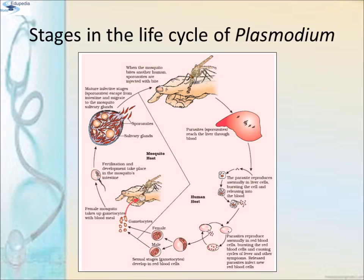This diagram shows the stages in the life cycle of Plasmodium. When the mosquito bites a human, sporozoites are injected. The sporozoites reach the liver through blood, where parasites reproduce asexually, bursting the liver cells and releasing into the blood. Parasites then reproduce asexually in red blood cells, bursting them and causing cycles of fever and other symptoms. Released parasites infect new red blood cells. In the sexual stage, gametocytes develop in the red blood cells. The female mosquito takes up gametocytes during a blood meal; fertilization and development occur in the mosquito's intestine. Mature sporozoites escape and migrate to the mosquito's salivary glands. So Plasmodium requires two hosts — the mosquito host and the human host.